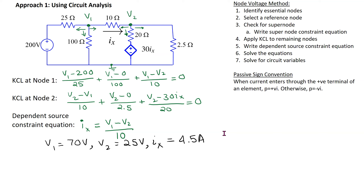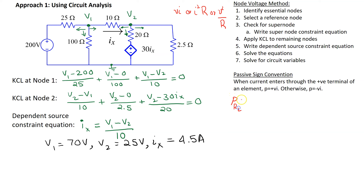Once we solve the circuit using the node voltage method, we can solve for the power dissipated in the load resistor as well as the power associated with the two voltage sources. The power dissipated in a resistor is given by VI, I²R, or V²/R. Here we know V2, which is the voltage drop across the load resistor, so we use V2²/RL. V2 is 25 volts, so this is 25² over 2.5, which comes out to 250 watts.